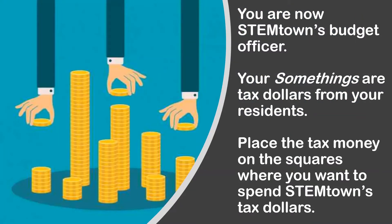Congratulations on your new job as the budget officer for STEMTown. You have a big responsibility — you have to ensure that STEMTown's departments have all of the money they need to operate at their best. Like all cities, STEMTown gets its money through taxes, which is the money that people who live in the city pay. The 15 somethings you got represents tax dollars — it's STEMTown's tax money. Take a few minutes to put all of STEMTown's dollars into the departments on your grid.